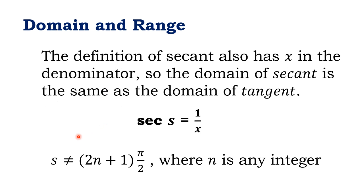Next, let's look at the secant function. Secant S is defined as 1 over x. Again, we restrict x from equaling 0 so this fraction remains defined. Since x is the denominator for secant S just as it is for tangent, the domain of secant is the same as the domain of tangent. Therefore, the arc length S in the secant function must also not equal (2n+1) times π/2.